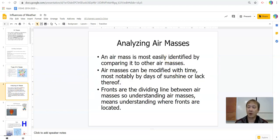Like I said, we can easily identify them by comparing one mass to another based off of their properties, the temperature and moisture level. They can be modified at a time, most normally due to sunshine or lack thereof. If there's a lot of sunshine, we see more evaporation, so that evaporation could cause more moisture if it's over a body of water, or a lack of sunshine could cause the temperature to drop. So you see condensation and it could cause rain, which means it's going to decrease that amount of moisture.